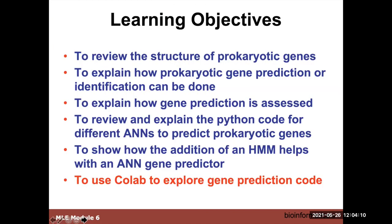To understand how you can use machine learning for gene prediction, we're going to focus on prokaryotic genes. These are simpler genes, with simpler gene structure than eukaryotic genes. The best advances and best utility of machine learning have been applied in eukaryotic gene prediction, but since this is an introductory course and prokaryotic genes are a little simpler, we're going to focus on prokaryotic gene prediction as an illustrative example of how you can use machine learning to predict genes in bacteria.